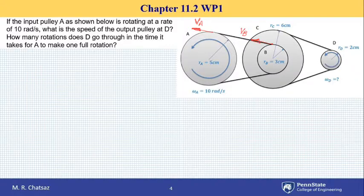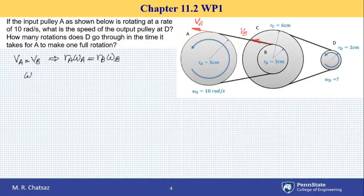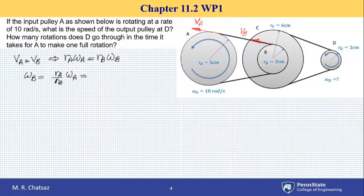Since V_A equals V_B, we can write: V_A equals R_A times omega_A, and V_B equals R_B times omega_B. Since I have both radii, I can easily find omega_B, which is rigidly attached to disk C, having the same angular speed — so it's like I've found omega_C. Solving for omega_B gives R_A over R_B times omega_A, and observe that this is the same angular speed of C, because B and C are rotating together, so I call this omega_C.